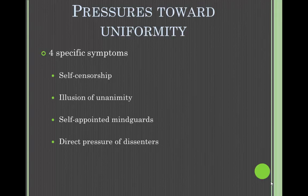The third category is pressures toward uniformity — the go-along-to-get-along approach — broken down into four specific symptoms. The first is self-censorship: group members minimize their doubts and counter-arguments, second-guess their own ideas, silence their own opposing views, and using in-group rhetoric, further bolster the decisions of the group.